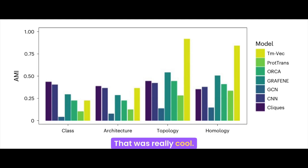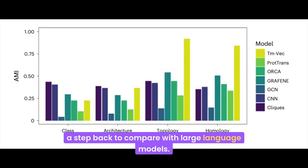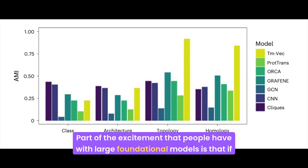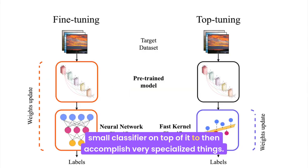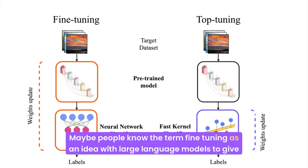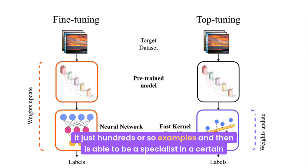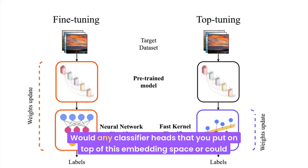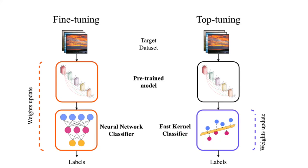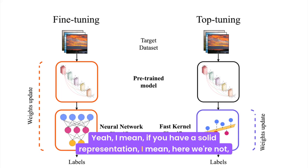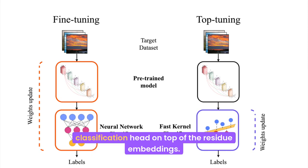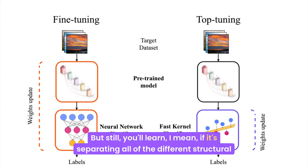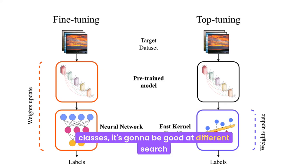Taking a step back to compare with large language models: part of the excitement with large foundational models is that if you have a good embedding space, you can put a pretty small classifier on top to accomplish very specialized things. Were there any classifier heads you put on top of this embedding space? If you have a solid representation and learn a flat vector for proteins, you could add a classification head on top of the residue embeddings. If it's separating all the different structural classes, it'll be good at different downstream tasks. You could imagine predicting secondary structure class of a protein, which could be really applicable to metagenomics — where you have a bio sample and you're not sure what's inside, what type of protein, what organisms — and you just want to know what these things are folding up into.